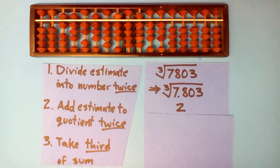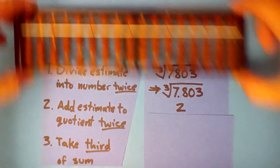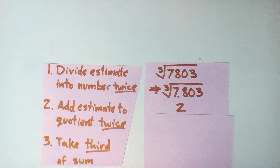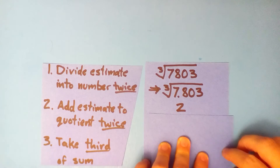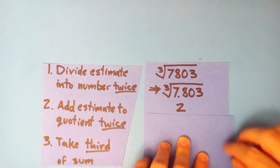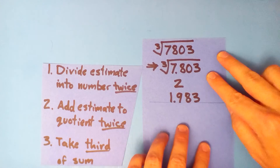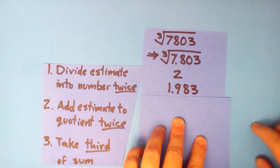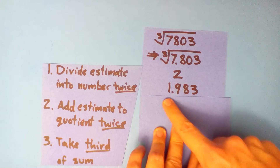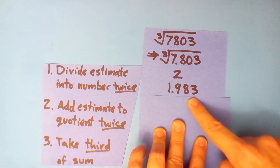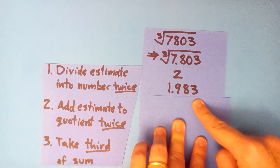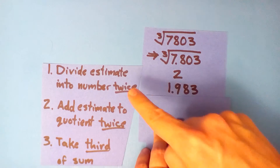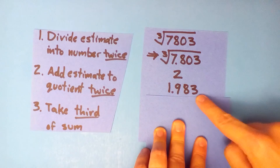We need a cube that's about 7.8 — 2 cubed is 8, so let's use 2 as our first estimate. Go ahead, get started. I'll just tell you the intermediate steps so you can work and pause until you're ready. Your improvement should be 1.983 — I like to go 4 digits, but you can use 3 or 5.